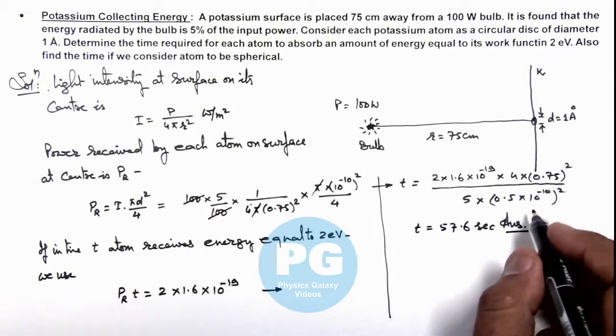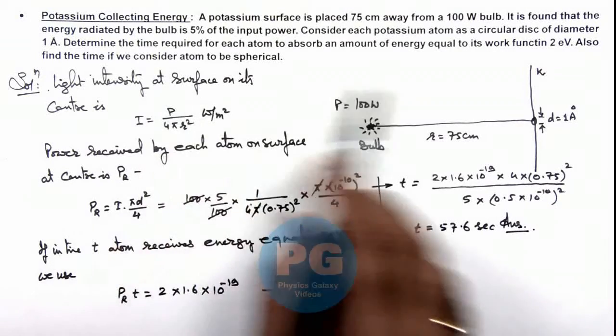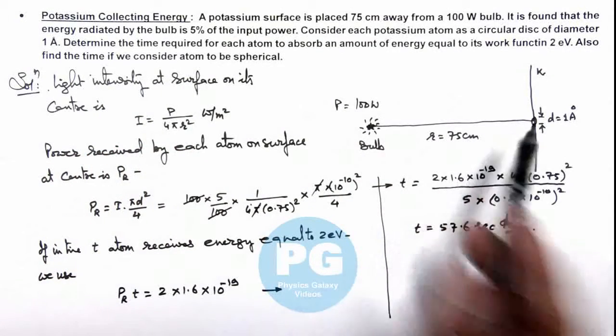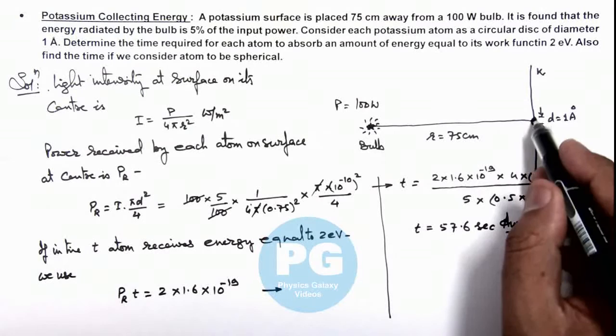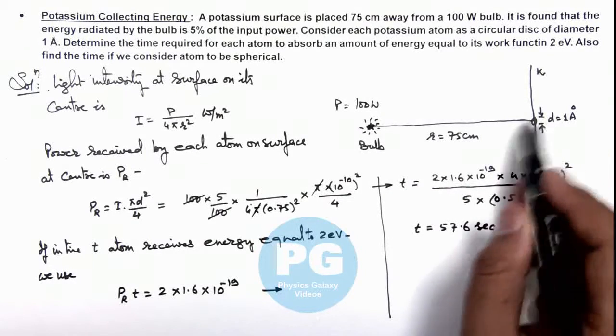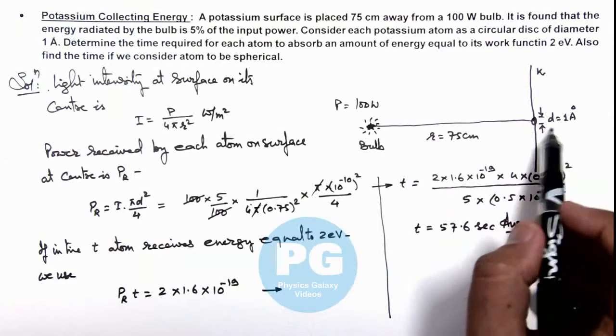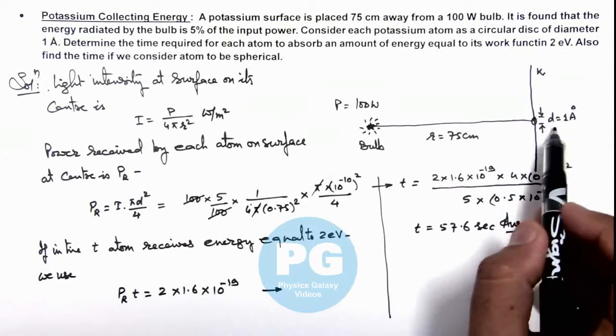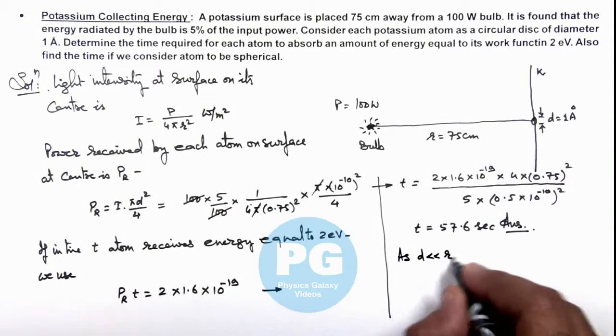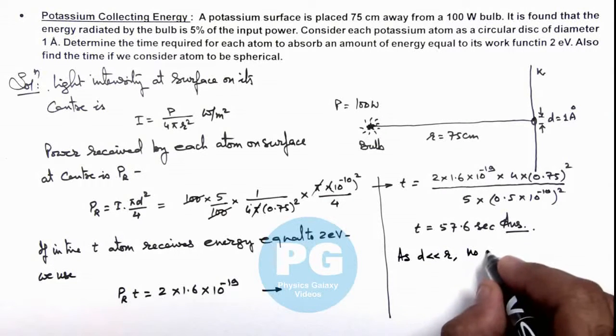We are also required to see what the time will be if we consider the atom to be spherical. If the atom is considered as a disc or a sphere, it obtains the same solid angle because the diameter is very small compared to r. So d << r, and no change...